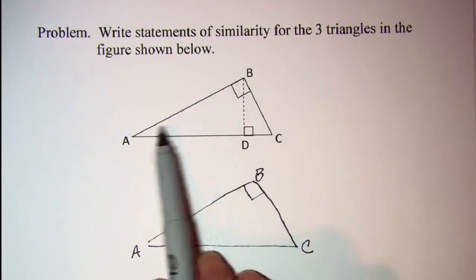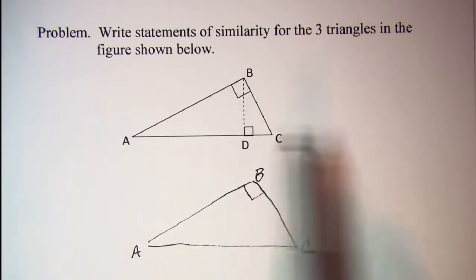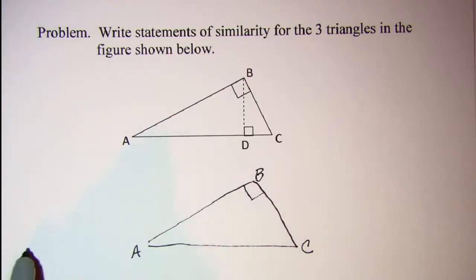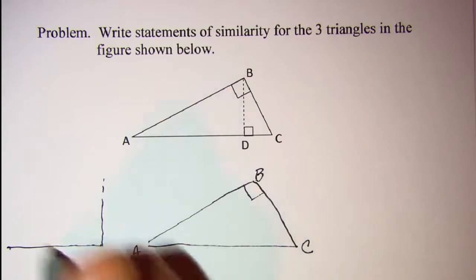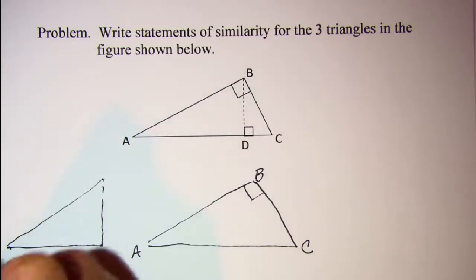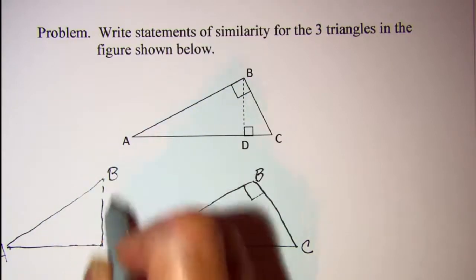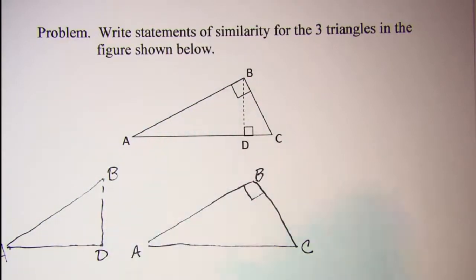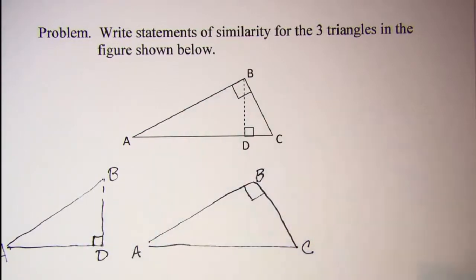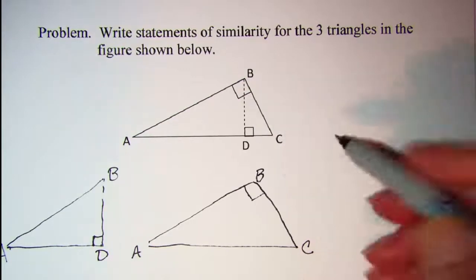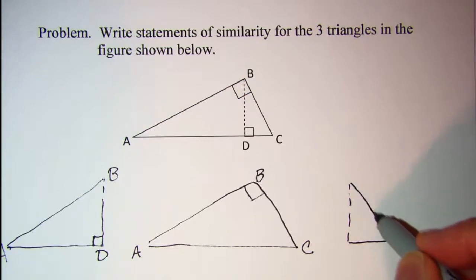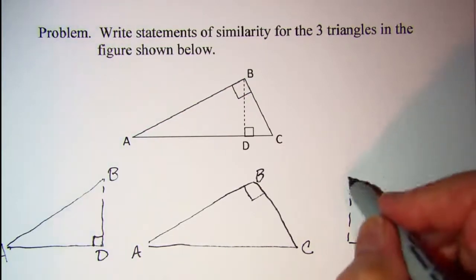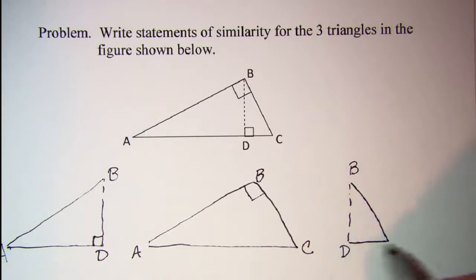On the left side we have a right triangle with vertices A, B, and E. On the right side there is another right triangle with vertices B, D, and C.